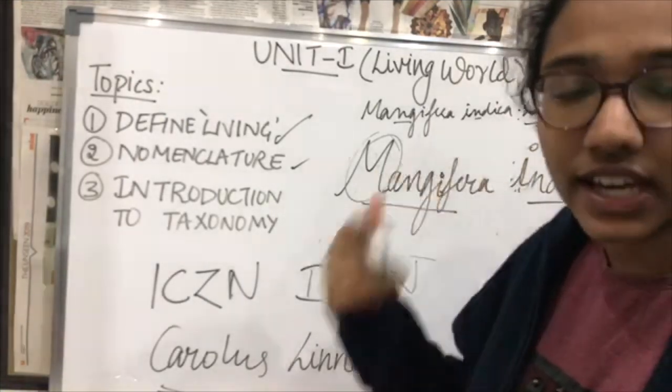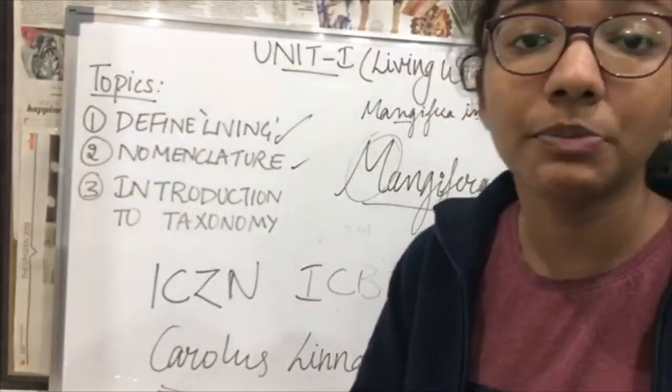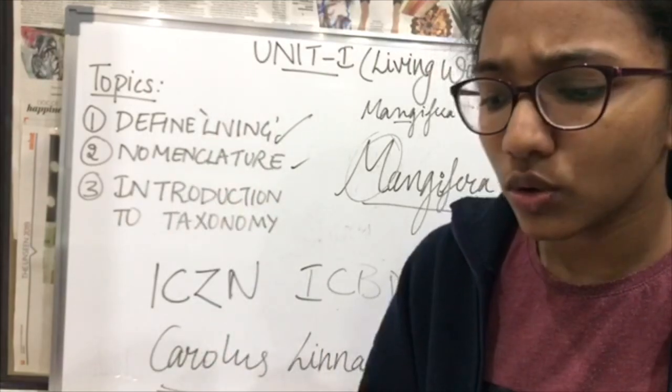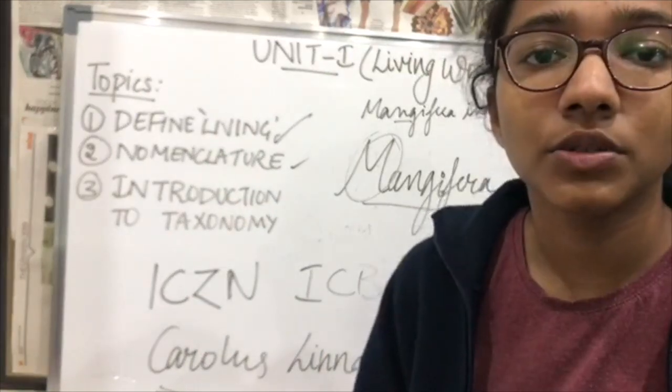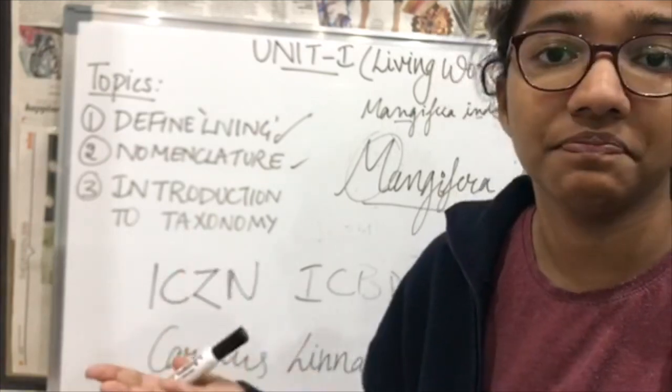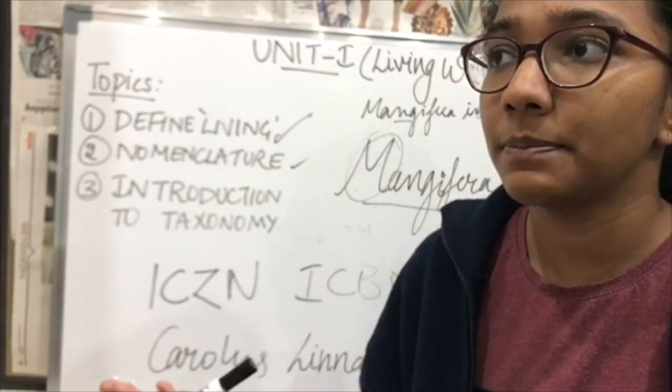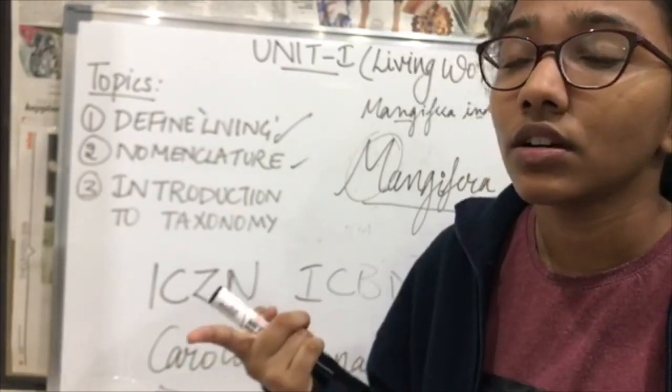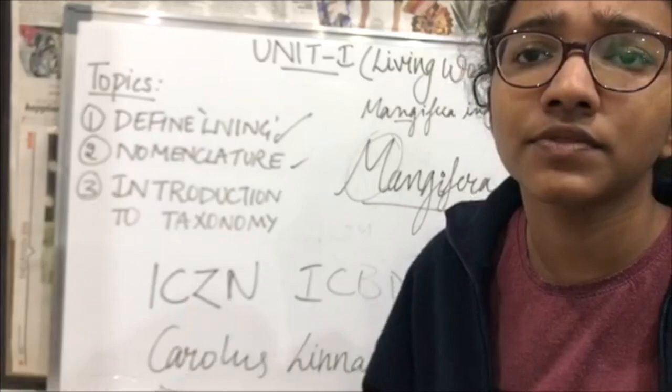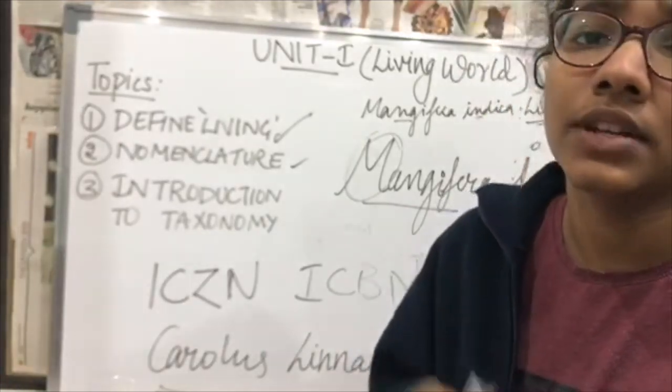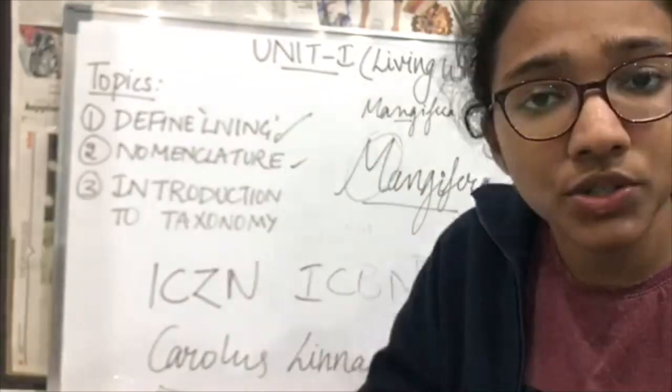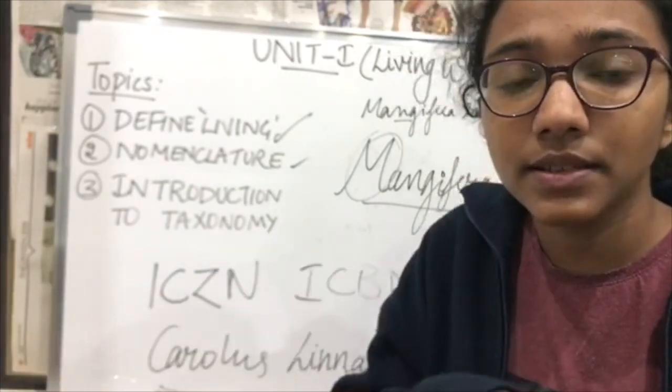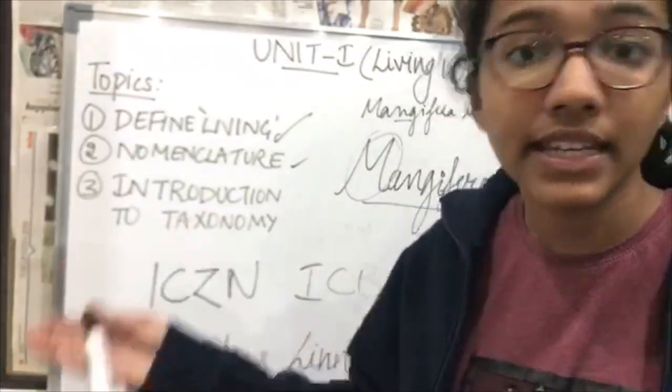Now let's come to an important part, that is classification. If I ask you to imagine characteristics of a mammal, you'd probably say presence of mammary glands or external ear or hair. I'm trying to say when you take certain characteristics and based on that you place different animals in different groups, these groups are known as taxa. Taxa is any category.